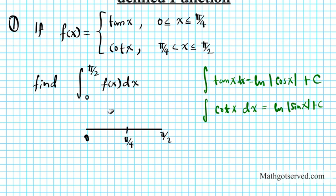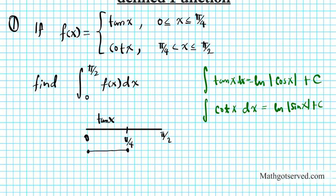This integral is telling us to calculate the integral from 0 to pi over 4. We know there's a switch: tan x ranges from 0 to pi over 4 — that's the domain for tan x. Then it switches to cotangent from pi over 4 all the way to pi over 2. To be precise with interval notation: tan x goes from a closed circle at 0 to pi over 4, and cotangent x goes from an open circle at pi over 4 to pi over 2.